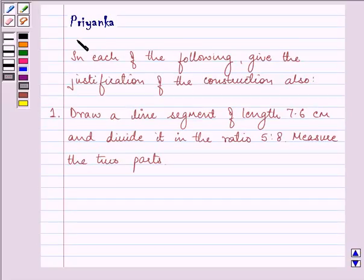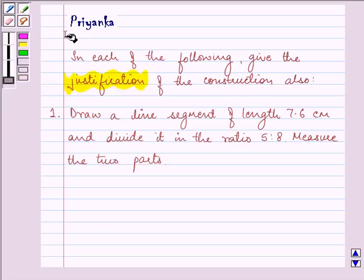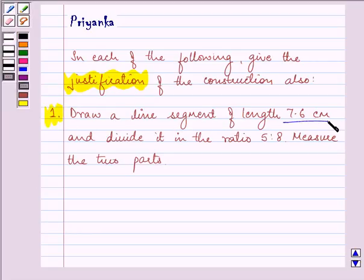Hello, my name is Priyanka. The question asks to provide justification for each construction. Today's first construction is: draw a line segment of length 7.6 cm and divide it in the ratio 5:8. Measure the two parts.